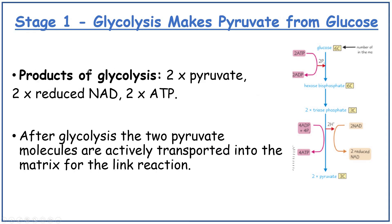The products of glycolysis are: two three-carbon pyruvate molecules, two reduced NAD, and a net gain of two ATP. After glycolysis, the two pyruvate molecules are actively transported into the matrix for the link reaction.